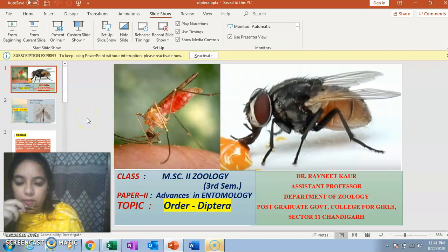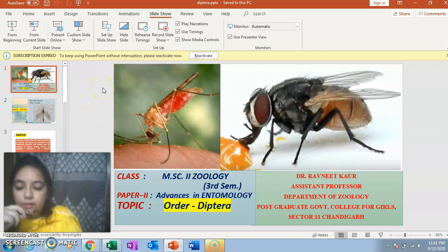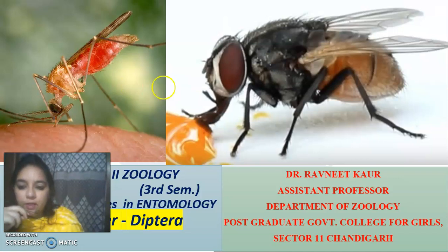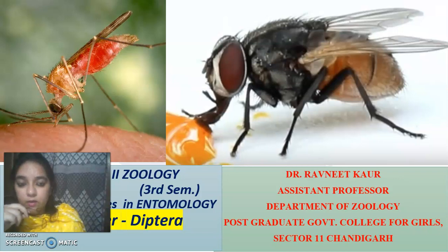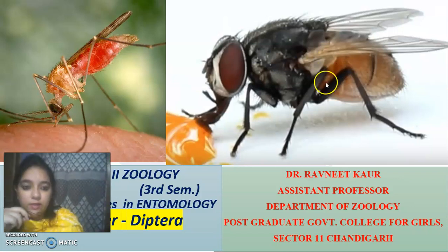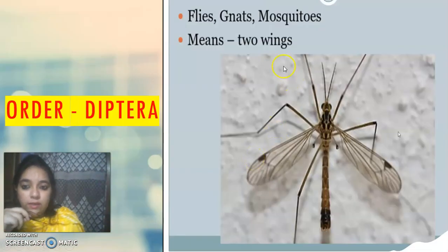Today we are going to start with a new topic, that is Order Diptera. As you can see the pictures, these are very familiar insects included in Order Diptera. You can see a mosquito and a fly. So Order Diptera, or Diptera, includes flies, gnats, and mosquitoes.